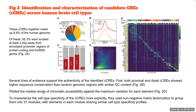They plotted the median level of chromatin accessibility against the maximum variation of each element. To characterize cell-type specificity, they used non-negative matrix factorization and classified elements into 37 modules, with elements in each module sharing a cell-type specificity profile. The diagonal of the resulting matrix shows very high module specificity, except for module one, which represents ubiquitous cis-regulatory elements present across all regions.